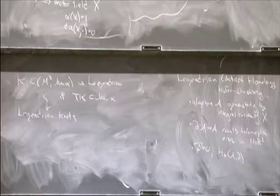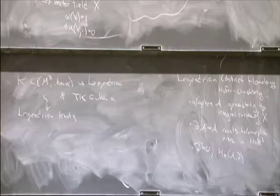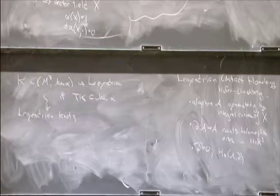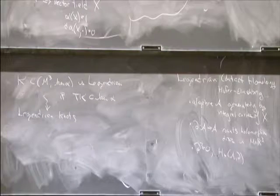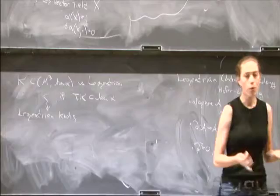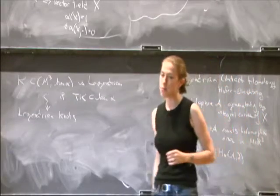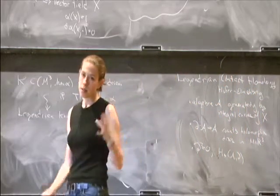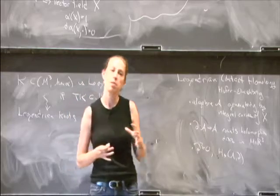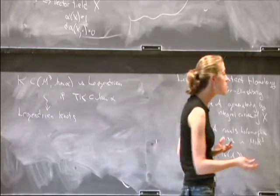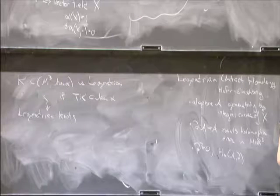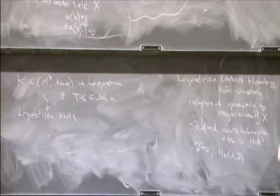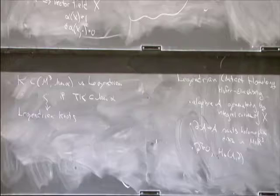We looked at Legendrian knots in Seifert fiber spaces. Seifert fiber spaces are an important class of 3-manifolds. They've been studied for a long time. It's a 3-manifold together with a decomposition as a disjoint union of S1s. And perhaps in this setting, the most useful thing to know about them is that you can think of the 3-manifold as an S1 bundle over a two-dimensional orbifold.